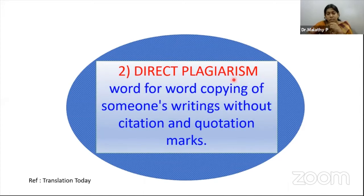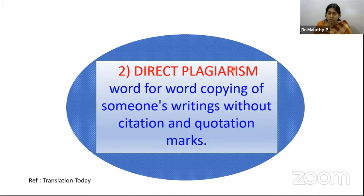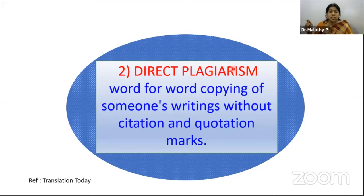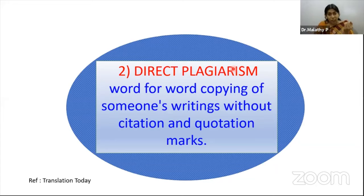Second is direct plagiarism: word-for-word copying, copying verbatim a portion of text from someone's writing without citation or quotation. A quotation means you give it in double quotes verbatim. A citation means you convey the idea of the writer in your own words, but since the idea is not originally yours, you must give a citation and duly acknowledge the source. Both are called direct plagiarism if you don't acknowledge the original author.